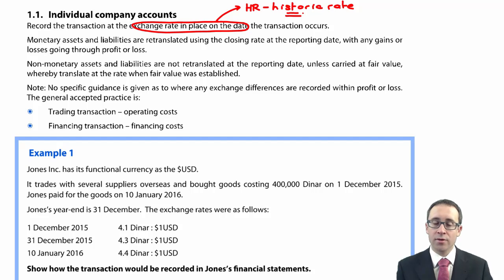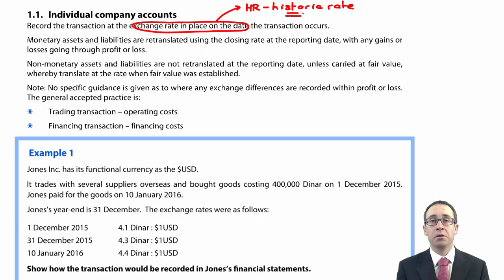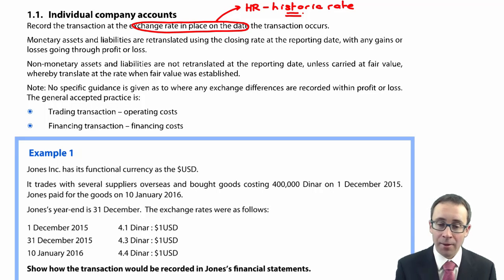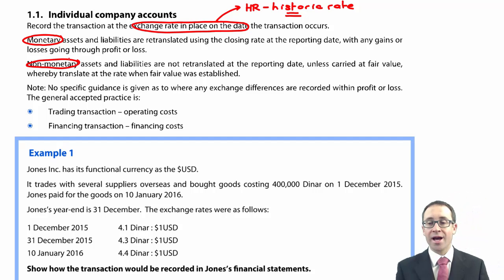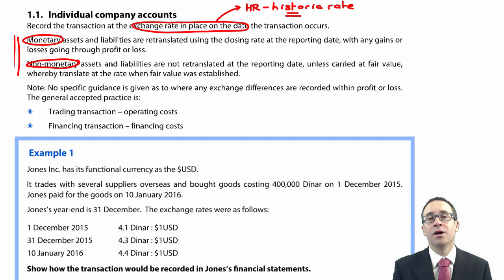Once you've translated it, you process the debit and credit. If you then make another transaction — say you pay your supplier or receive cash from a credit customer — you record the cash receipt or cash payment at the rate in place on the date that cash receipt or payment takes place. Then we need to think about what we do subsequently at the year end — or to give it its true name, the reporting date. At the reporting date, we go through every line item in the statement of financial position and identify what's monetary and what is non-monetary.